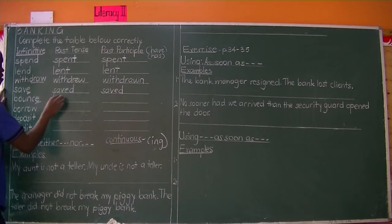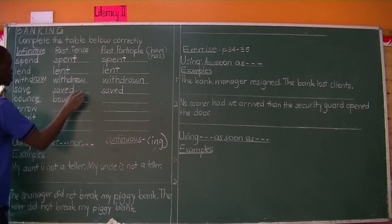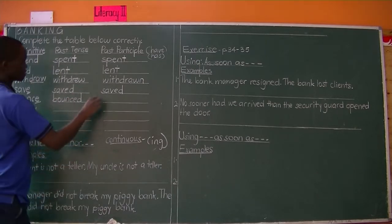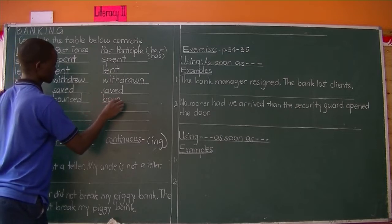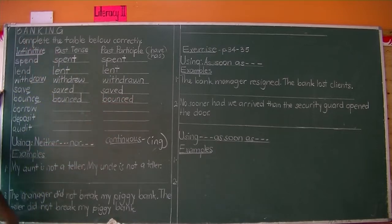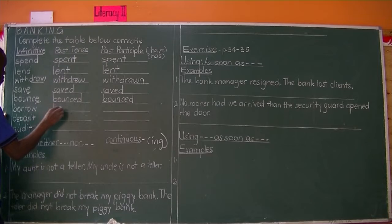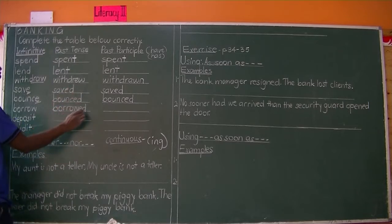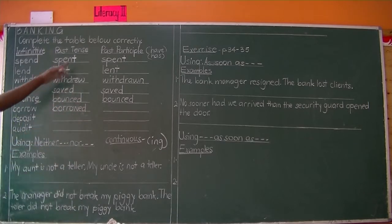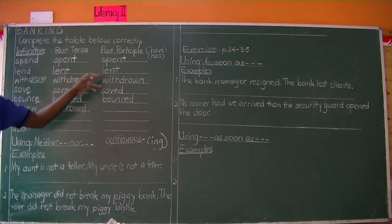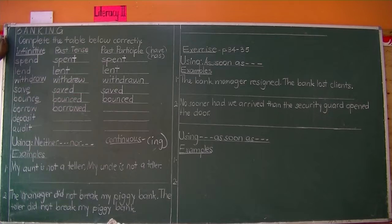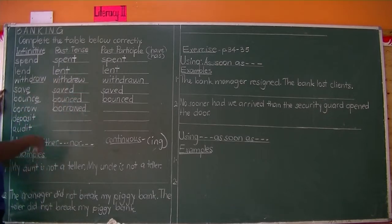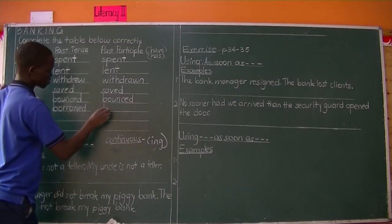'Bounced' is our past tense of 'bounce.' For example: 'My check bounced because I didn't have enough money in my account' — past tense. 'My check has bounced' — past participle. The past tense and past participle are the same here. Then 'borrow' changes to 'borrowed.' These are regular verbs — you can see the ED ending. Verbs with ED are called regular verbs.